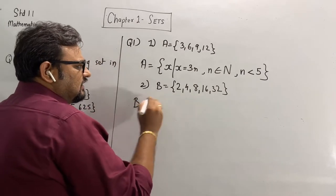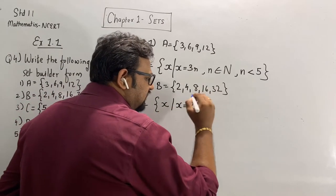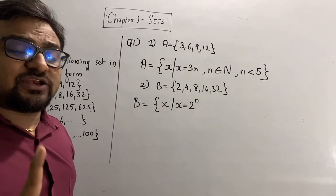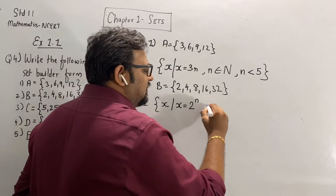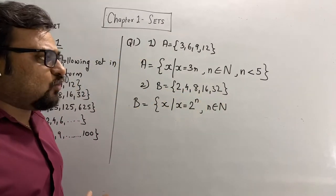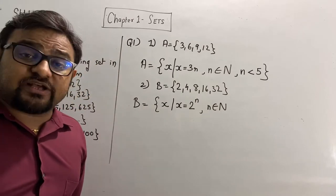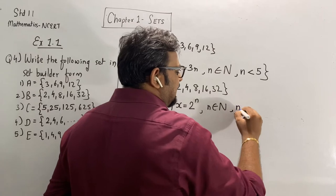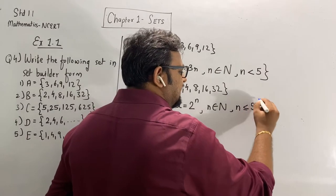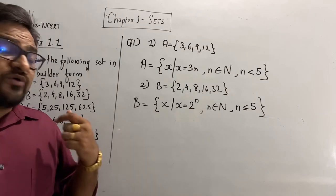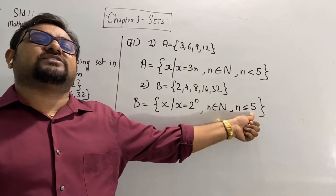So I can write: B = {x such that x = 2ⁿ}. Now you need to specify which values of n you can take. Again, n belongs to natural numbers because the first value equals 1. I can't take n=6 because 2⁶ = 64. So I can write n is less than 6, or equivalently n is less than or equal to 5. Both are correct.